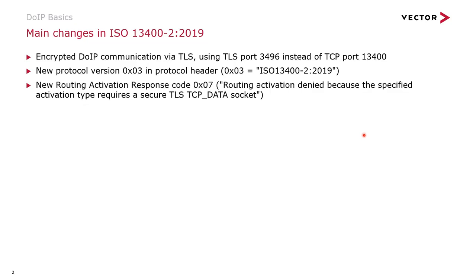The major change of the new DoIP standard released end of 2019 is that it additionally specifies the encrypted communication over the protocol Transport Layer Security, in short TLS.